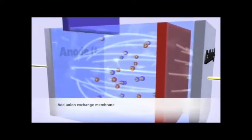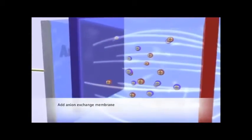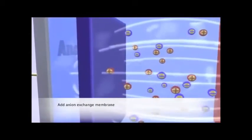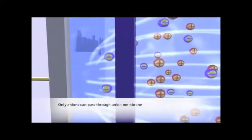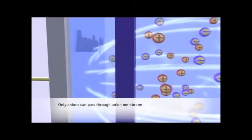When we insert another ion exchange membrane, this time made out of anion-selective resins, it will block the flow of cations and water molecules. Only anions will be able to pass through to the other side.